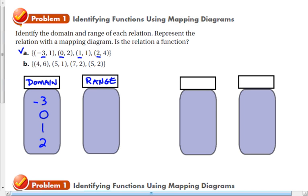I'm going to put all my range values in the range jar. So that's 1, 2, we already have 1, we don't need to write that again and 4. And then I'm going to use arrows to map from one jar to the other according to the ordered pairs. So negative 3 goes with 1, 0 goes with 2, 1 goes with 1, and 2 goes with 4.